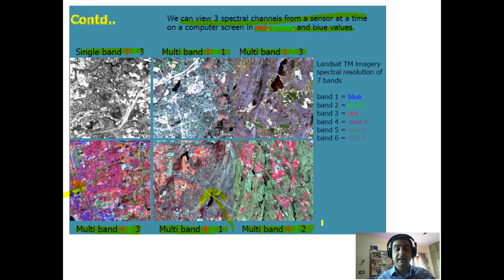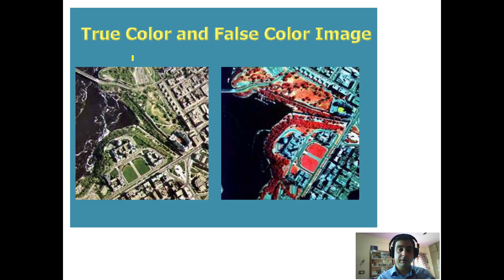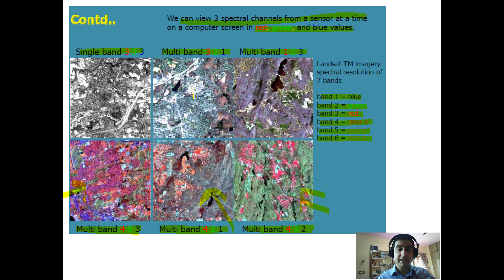Band four-three-two in composite form looks different when viewed on the monitor. Band one pertains to blue, band two to green, band three to red, band four to near infrared, band five to mid infrared, and band six to mid infrared. Placing bands in sequences like three-two-one, one-two-three, or four-five-six gives rise to true color composites and false color composites.